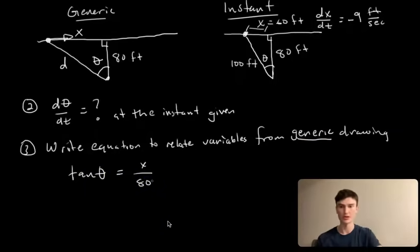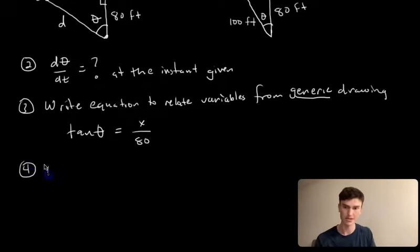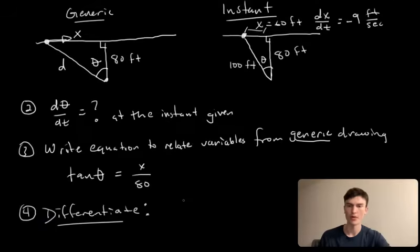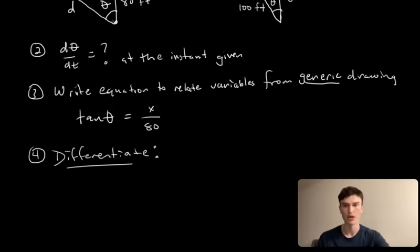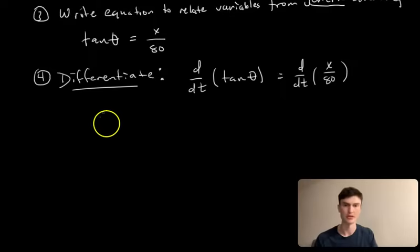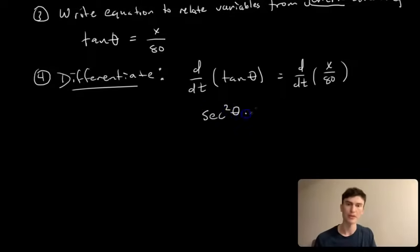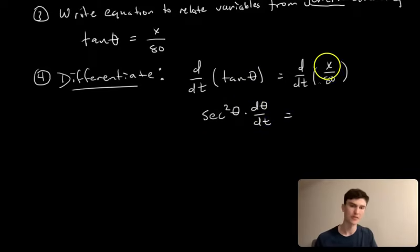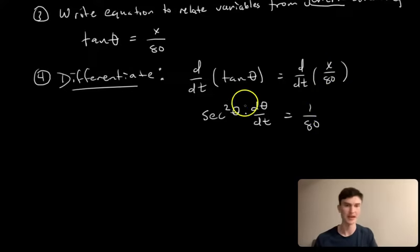Step 4 is to differentiate. We differentiate tan(θ) = X/80 with respect to time on both sides. The left side requires the chain rule: the derivative of tangent is secant squared, so we get sec²(θ)·dθ/dt. The right side gives (1/80)·dx/dt.